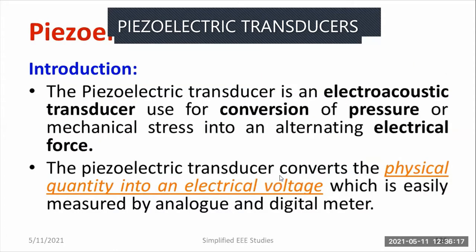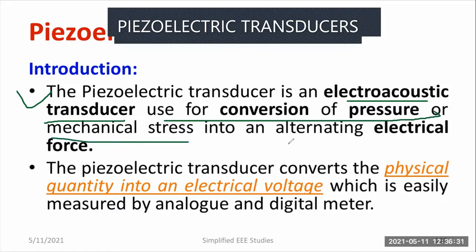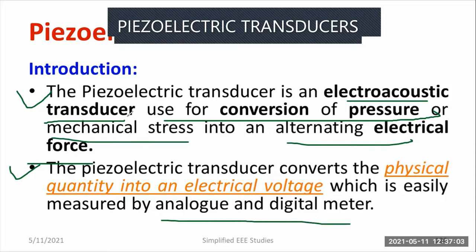What do you mean by piezoelectric transducer? What are the peculiarities of piezoelectric transducer? The piezoelectric transducer is an electroacoustic transducer used for conversion of pressure or mechanical stress into alternating electrical force. Pressure and mechanical stress are non-electrical quantities that are converted into electrical force using the piezoelectric effect. It is applicable only for certain types of crystals, not for all types of solid material. The piezoelectric transducer converts the physical quantity into an electrical voltage, which is easily measured by any kind of voltage measuring techniques such as analog or digital methods.